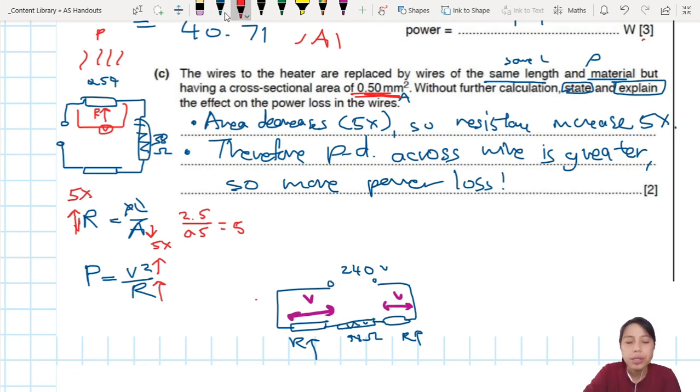Two marks. One is your state. You say more power loss or power loss is greater. That one is your state. But you need to explain. So that's a method mark that must come before that. State and explain usually is an M1, A1. So here you say, area decrease, resistance increase. Okay, that's your method mark. In this case, the mark scheme is quite generous. If you didn't say five times, also okay. So M1, A1, two marks for this one.